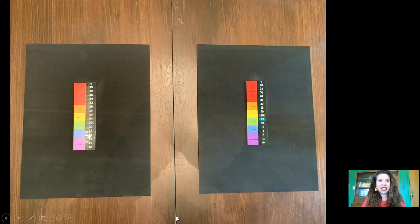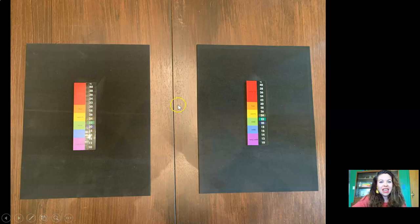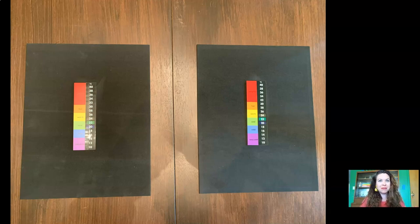Here's what the thermometers looked like when I began the investigation, before I turned the lamp on. Let's take a look at the temperature. On the left side, the temperature is marked as 22 degrees. Look at the thermometer on the right side — it's marked as 22 degrees also. Are they the same or are they different? Yeah, they're the same. They're both sitting in the same room and they're both the same temperature — 22 degrees.